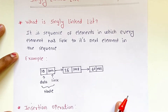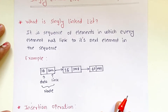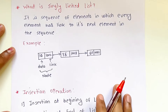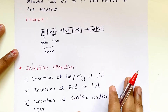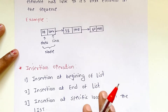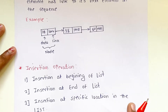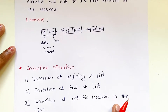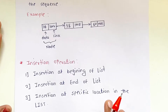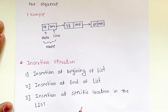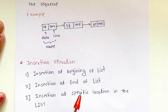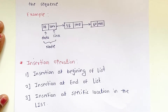Now let's see how to perform an insertion operation in a singly linked list. There are three ways you can insert a node in an existing linked list: insertion at the beginning of the list, insertion at the end of the list, and insertion at a specific location in the list.